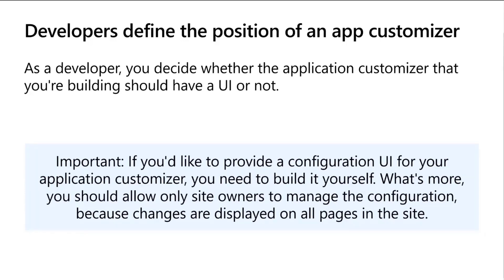As a developer, you define the position of an application customizer. This is the big difference between application customizers and web parts. Web parts are modified and configured by content editors. Application customizers are hooked or locked into the site — end users cannot get rid of them. They're actual code, so it's a developer experience. With SharePoint Framework extensions, the difference versus configuration options is that when it's SharePoint Framework, it's code — developer created and developer associated, not end user or site editor configurable.